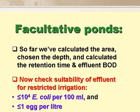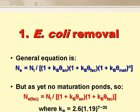What we should do next is to check if the facultative pond effluent can be used for restricted irrigation. For this, we generally need an effluent quality of no more than 10 to the 4 E. coli per 100 ml, and no more than 1 human intestinal nematode egg per litre. This is the general equation for E. coli removal in a series of anaerobic, facultative and maturation ponds. But at this stage in our design, we don't have any maturation ponds, so we use this simpler version, which covers just the anaerobic and facultative ponds.